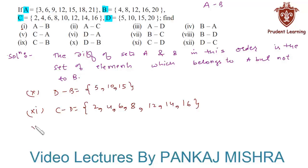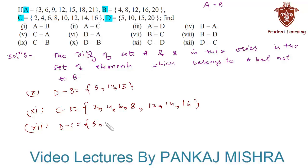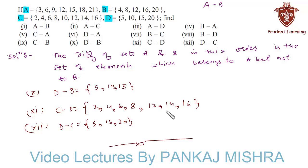And finally we have D minus C. This is equal to the set of all elements that are in set D but not in set C. Here we can see that 5, 15 and 20 are present in D only and not in set C. So this completes our solution. Let us see the next problem.